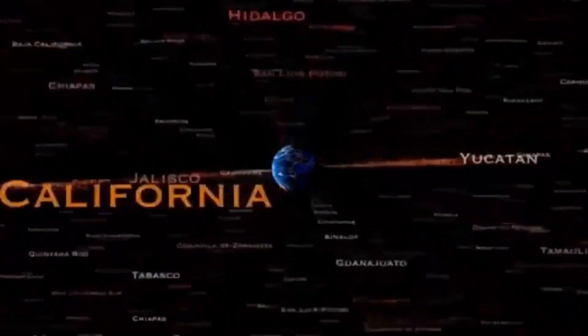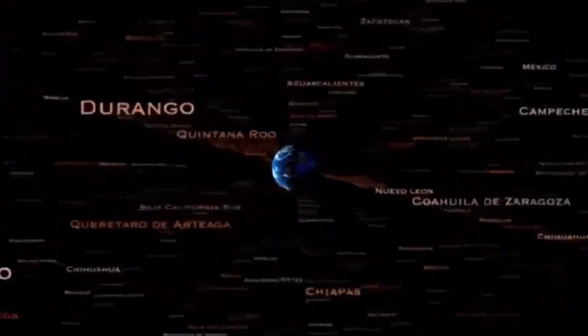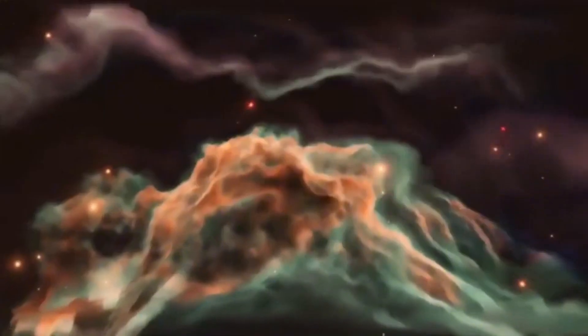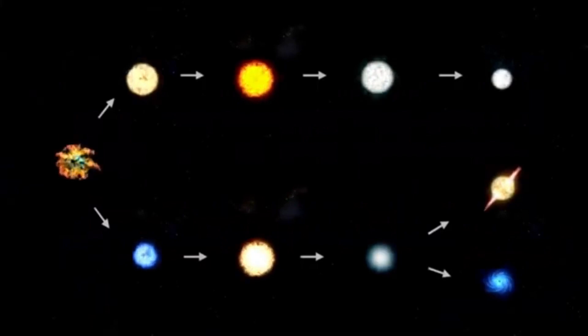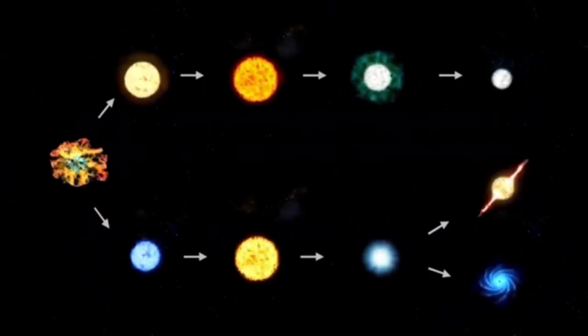Betelgeuse isn't just big, it's a cosmic rebel, living fast and dying young. Unlike our sun, a steady burner that'll shine for billions of years, red supergiants like Betelgeuse are reckless. They burn through their fuel at a ferocious pace, fusing hydrogen into helium, then helium into carbon, oxygen, and heavier elements in a nuclear frenzy.